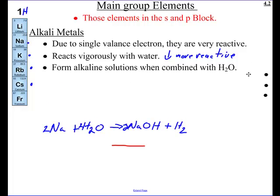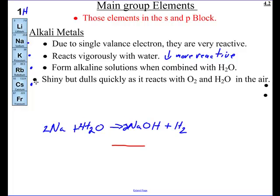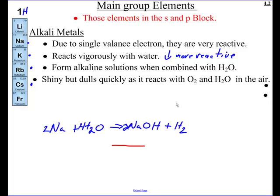Another property: alkali metals are really shiny, but they dull quickly as they react with oxygen in the air. If you take a bar of sodium and cut it with a knife, right where you cut it, it's really shiny, but then it turns gray very fast. That's because this stuff is so reactive — water vapor and oxygen in the air cause it to form oxides and probably hydroxides. Unlike silver, which stays shiny, alkali metals will not.